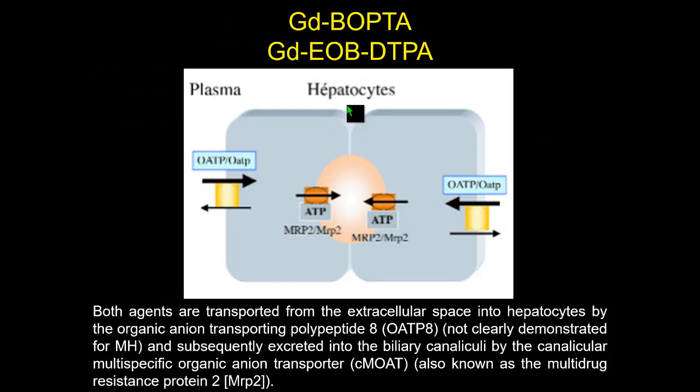For EOB, though not completely demonstrated for Multihance, the entry mechanism is via the organic anion transporting polypeptide OATP8 — the same mechanism used by bilirubin — allowing the agent to enter hepatocytes and be eliminated via the biliary ducts.